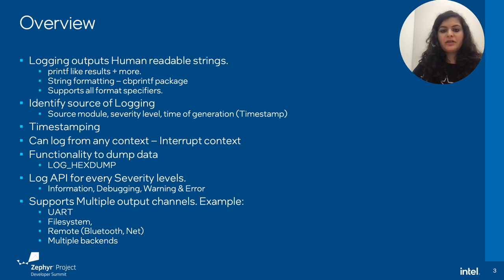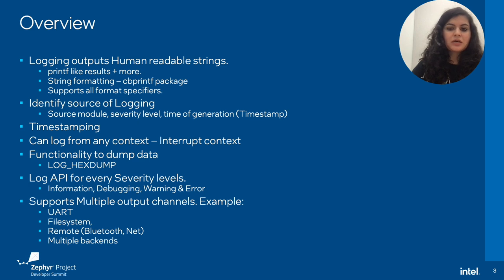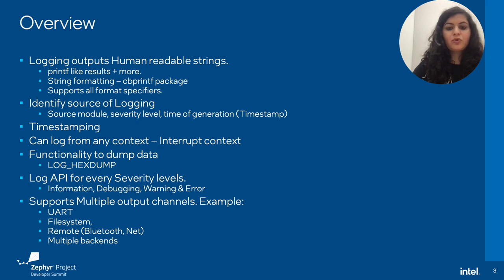We can log from any context in Zephyr, which is a key feature of the logging subsystem. This means we can log not just from threads, but even from the interrupt context, including high priority interrupts. We can also dump hex dump data using other log APIs like log_hexdump. We'll go over the log APIs supported in Zephyr in the upcoming slides.